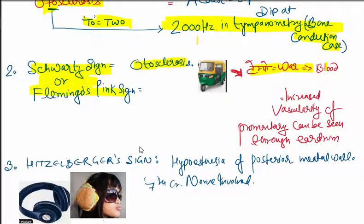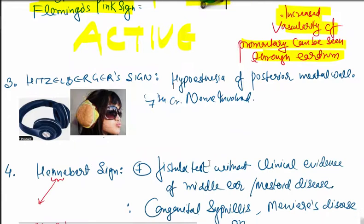Schwartz or flamingo pink sign - 'sword' has 'war' in it. Sword sign means war, cutting. Through the eardrum, increased vascularity of promontory can be seen, appearing bloody or reddish. If Schwartz sign is positive, the disease is active and surgery should not be done.